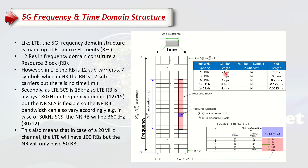For slot and subframe duration: one subframe equals 1 millisecond — true for both LTE and 5G. At 15 kHz with a 71 microsecond symbol length, we get 14 symbols in one millisecond. When we move to 30 kHz, the symbol duration is halved, so we have 28 symbols in one subframe. That means 14 symbols make one slot of 0.5 ms, giving us two slots per subframe. As we move to higher numerology, we get more symbols in one subframe.